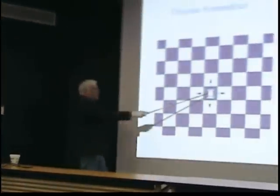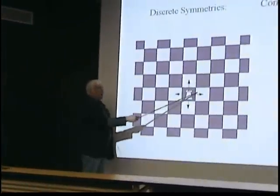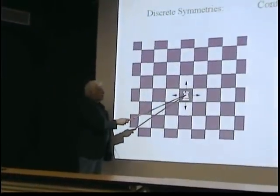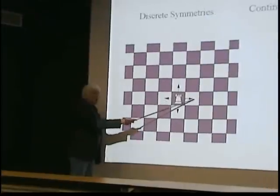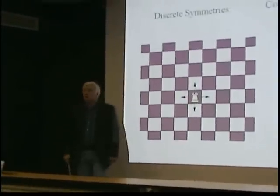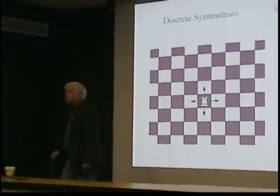But he has to take a discrete step. In other words, there's a smallest step he can take, and he can't take a smaller one. If he takes half a step, it doesn't quite look the same, because he's now on a line. He's sitting in the middle of a square — he's got to take a discrete step to get to the middle of the next square so that his universe looks the same.